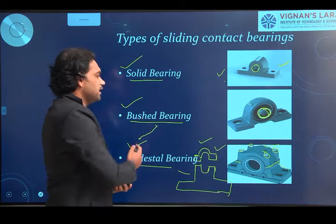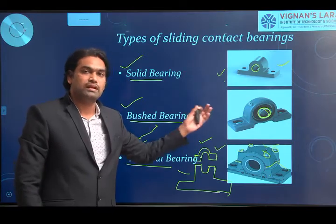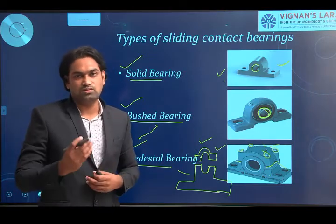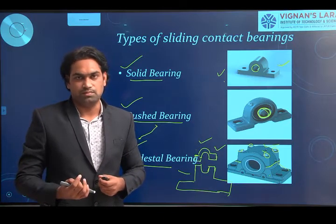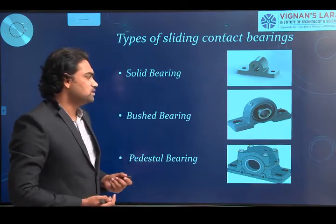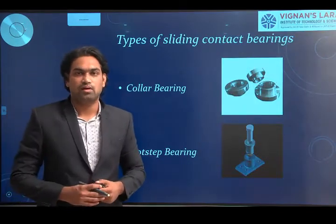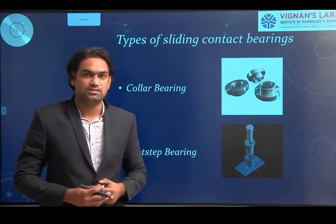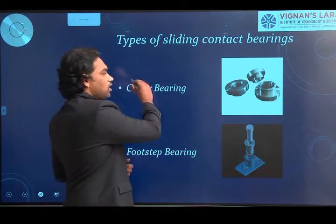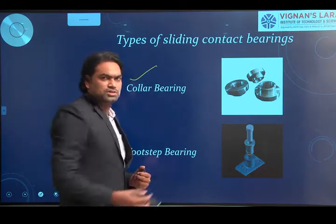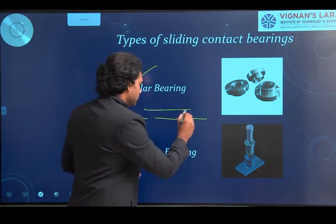So these are the three types of bearings in sliding contact that support radial loads: solid bearing, bushed bearing, and pedestal bearing. Coming to bearings that support the axial type of load — thrust bearings — we have two different types: collar bearing and footstep bearing.